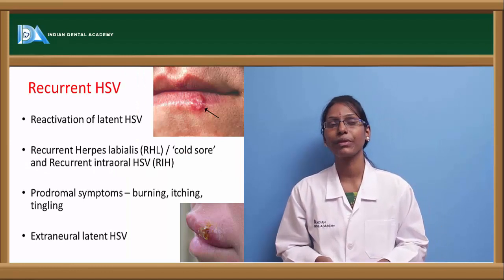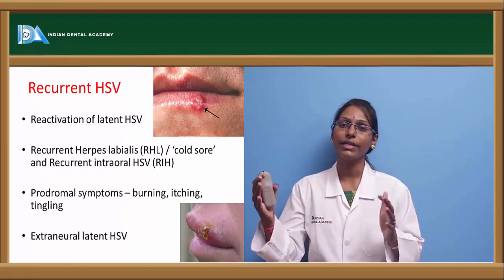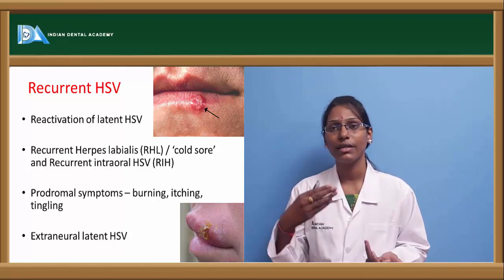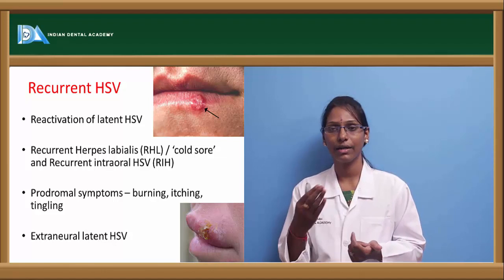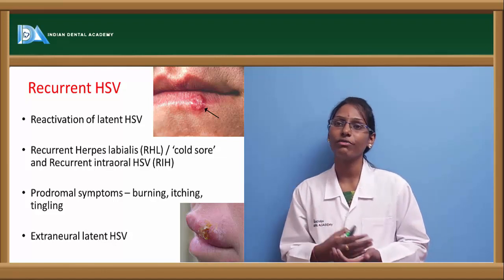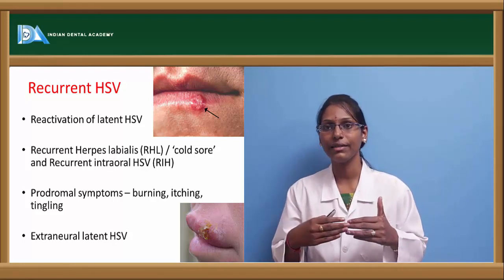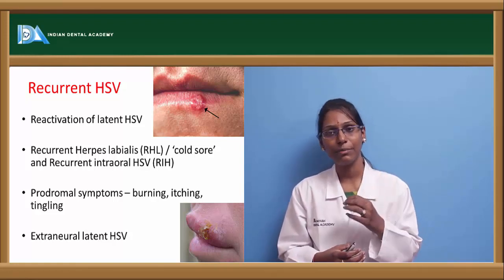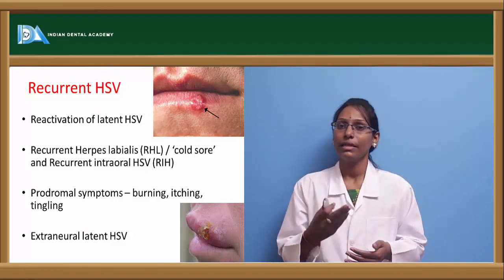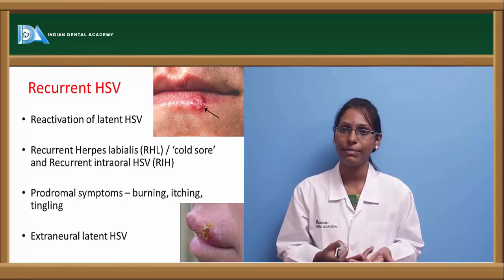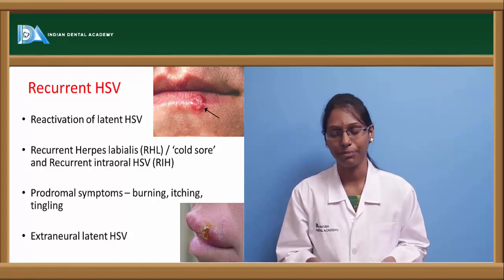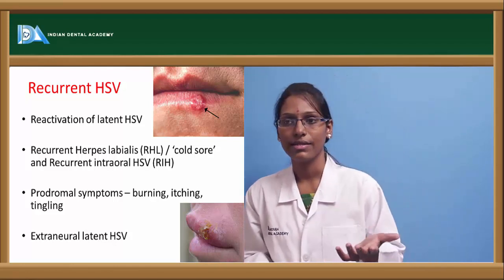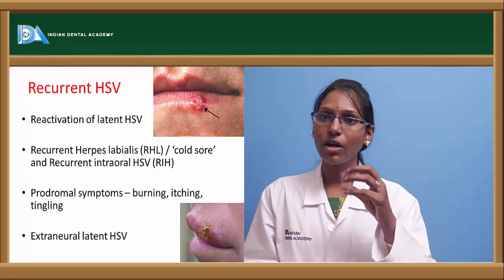Coming to recurrent HSV infection: this usually occurs after a certain period following the primary infection. In conditions such as immunocompromised state, direct exposure to ultraviolet rays, fever, or menstruation, there can be an outbreak of HSV infection that was latent in the neuronal or epithelial cells. If the HSV virus is present within the epithelial cells, it gives rise to ulcers again. This ulceration at the labial region is called recurrent herpes labialis, and the pathognomonic feature called a cold sore is also seen. Prodromal symptoms include burning, itching, tingling, and other sensations.